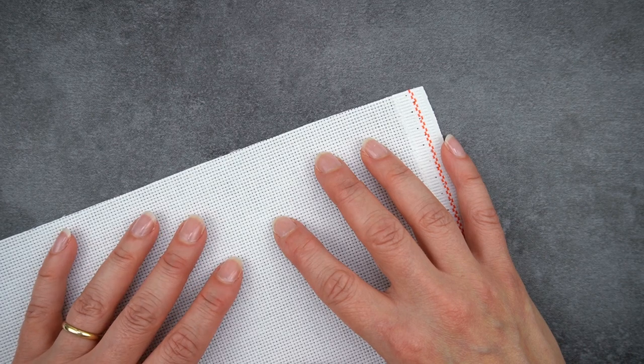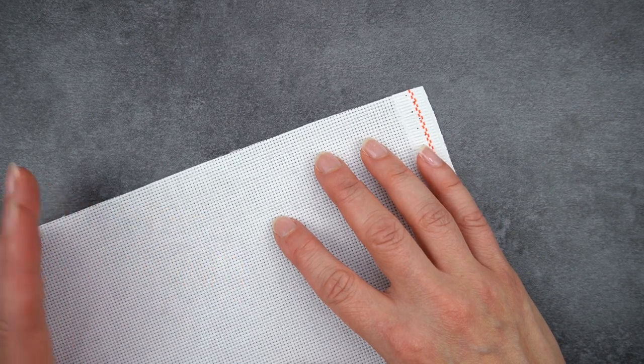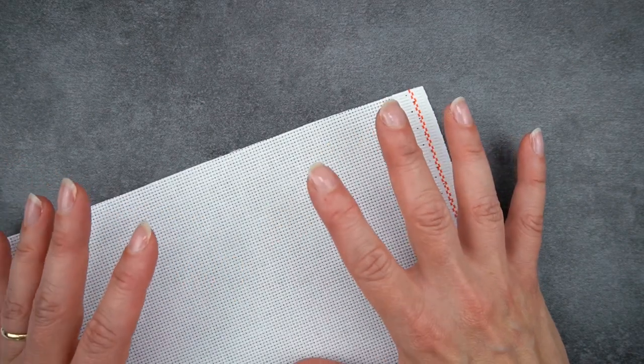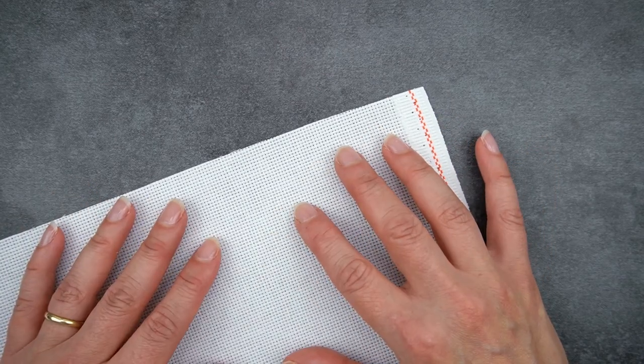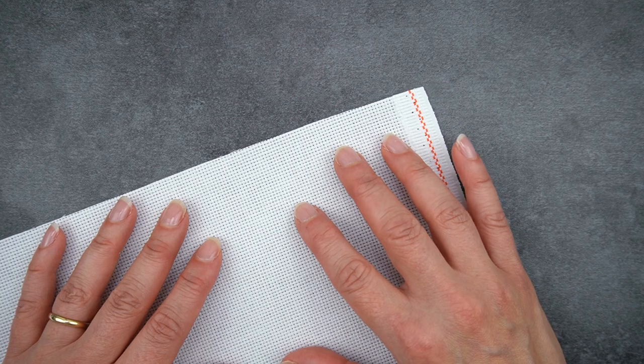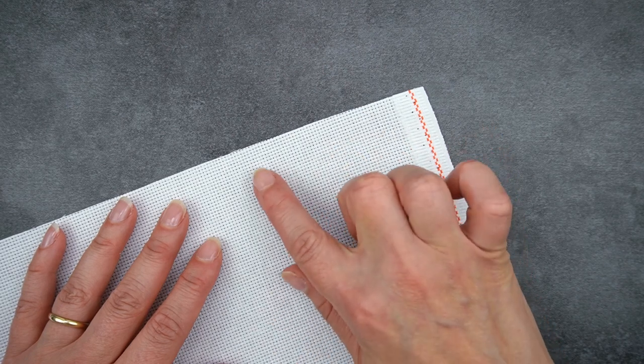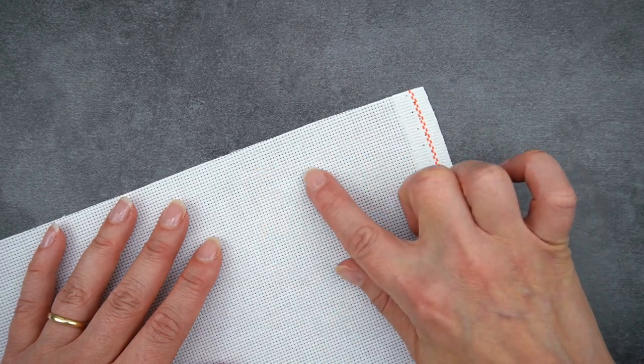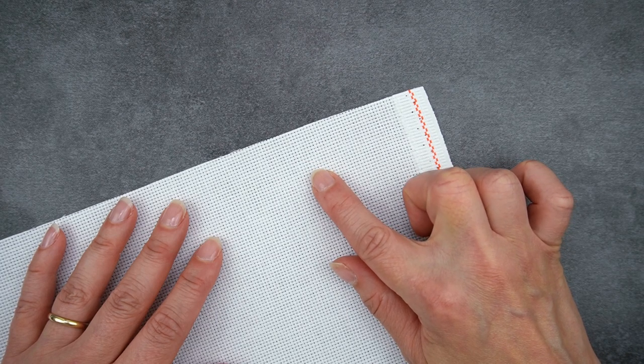I'm starting with Aida, but let's not get hung up on pronunciation here. Aida is a fabric usually made from 100% cotton that has bundles of threads woven into little blocks to form a regular grid of squares in which to stitch your crosses.